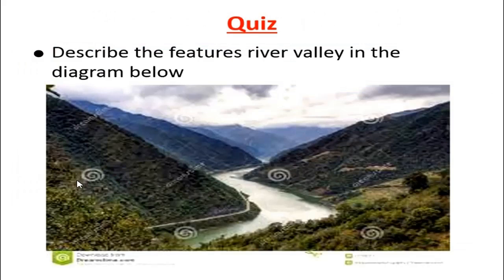Over here we have a quiz, which is something you should do at the end of this lesson. It says you should describe the features of a river valley in the diagram below. Remember, this is one of the mistakes that many learners make — you are asked to describe the features that you can see, but you try to describe all the features you can think of. You are required only to describe what you can see on the diagram. Don't describe all features of a certain part of a river, because not all rivers are the same.